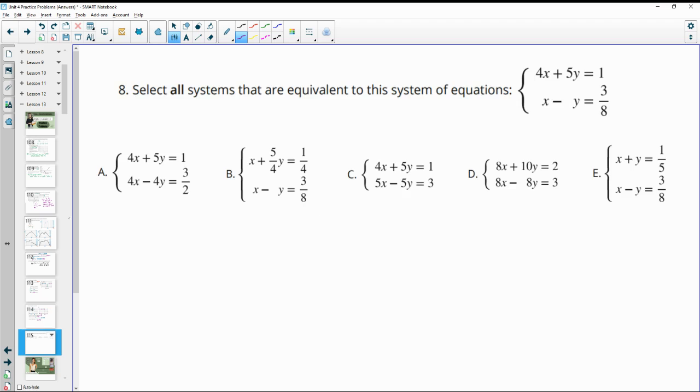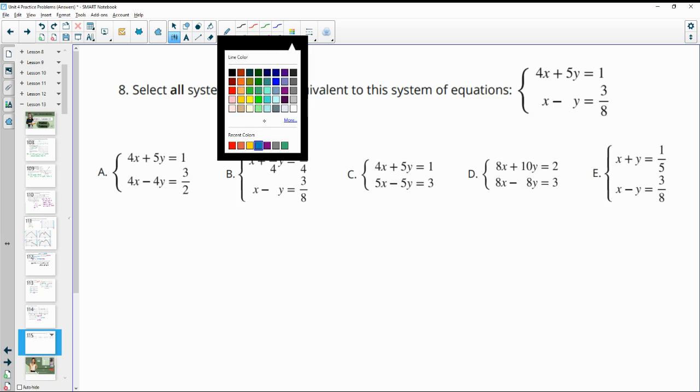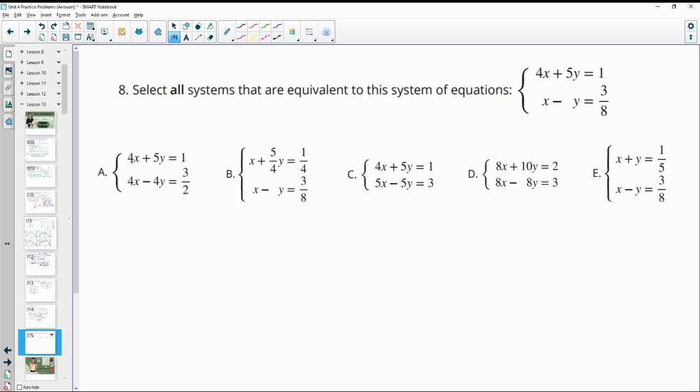Number eight, select all systems that are equivalent to this system. So remember, equivalent means that we add or subtract something or multiply or divide something to both sides of the equation. So let's look for a difference in each of these equations. So this first one, the top equation is exactly the same. So we're going to look at this second equation to see if we can manipulate it from this original one.